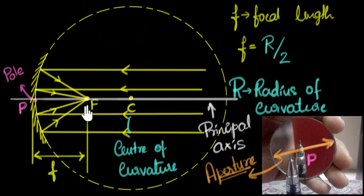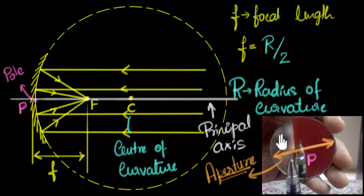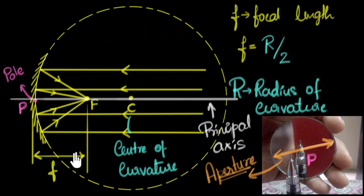So let's summarize what we learned. We learned a bunch of technical terms we'll be using in the future. The important result is that whenever we have spherical mirrors with small apertures — about two or three times smaller than the focal length — the focal length turns out to be roughly half the radius of curvature.